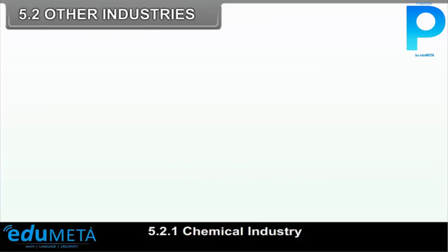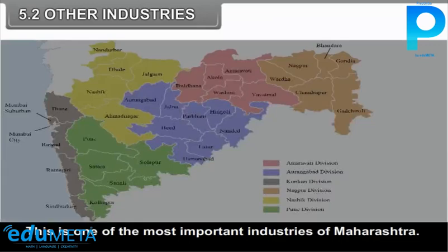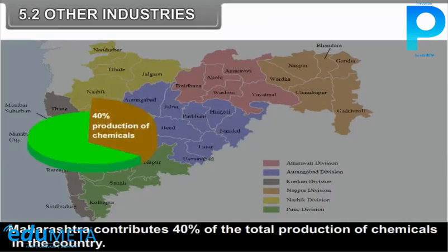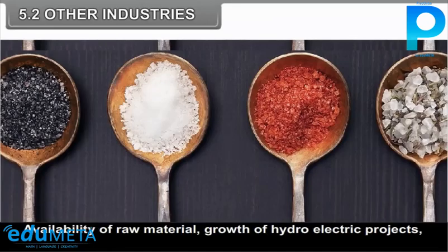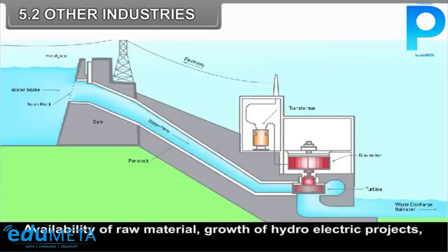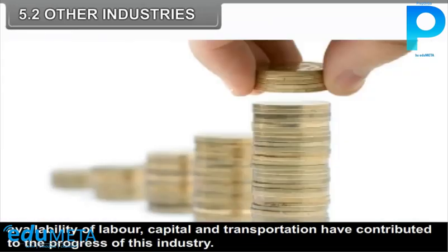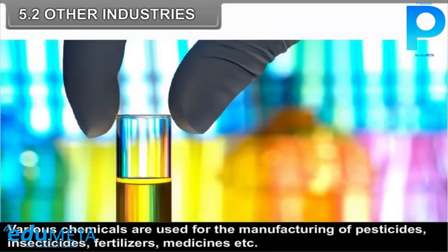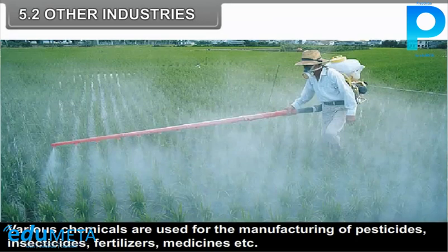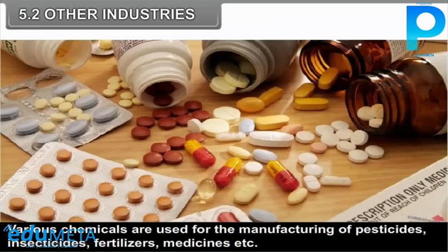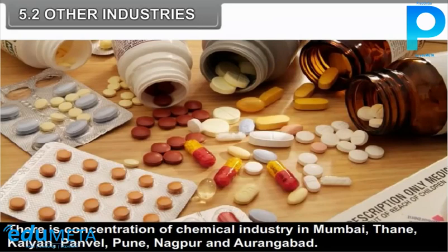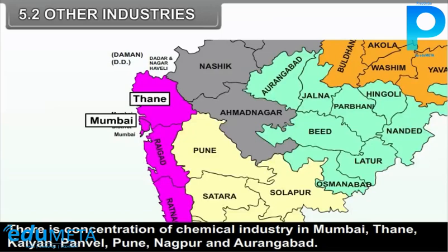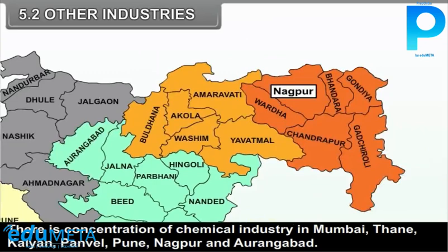Chemical industry is one of the most important industries of Maharashtra. Maharashtra contributes 40% of the total production of chemicals in the country. Availability of raw material, growth of hydroelectric projects, availability of labour, capital and transportation have contributed to the progress of this industry. Various chemicals are used for the manufacturing of pesticides, insecticides, fertilizers, medicines, etc. There is a concentration of chemical industry in Mumbai, Thane, Kalyan, Panvel, Pune, Nagpur and Aurangabad.